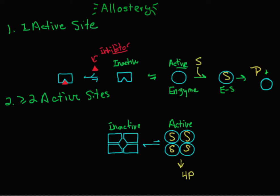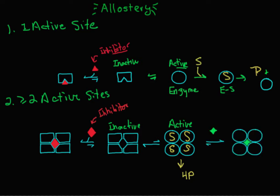An allosteric modifier could stabilize the inactive form of the enzyme at the other site — this would be an allosteric inhibitor and slow the reaction down. Or a modifier can stabilize the active form of the enzyme, making the reaction go faster — this would be an allosteric activator. Each of these bind at the other site, not the catalytic site, so these are heterotropic.